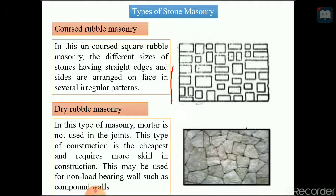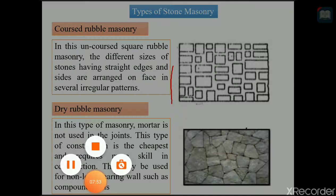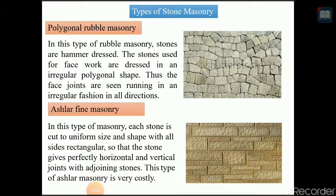The third part is dry rubble masonry. In this type of masonry, mortar is not used in the joints. This type of construction is the cheapest and requires more skill. It may be used for non-load-bearing walls such as compound walls. These walls are generally broader at the bottom and thinner at the top. The strength and durability depend upon the quality of workmanship.